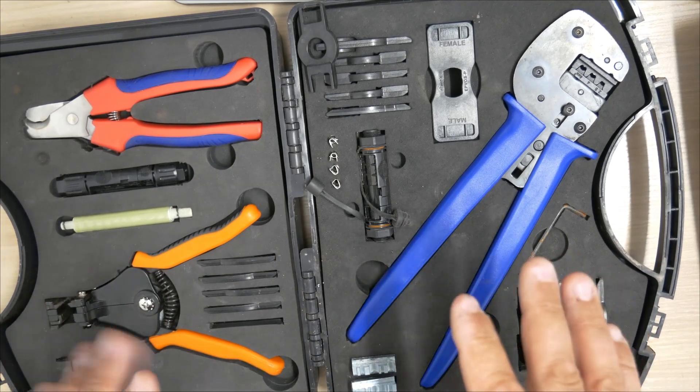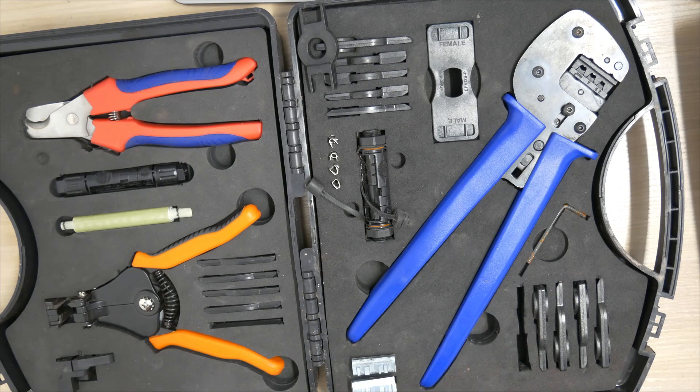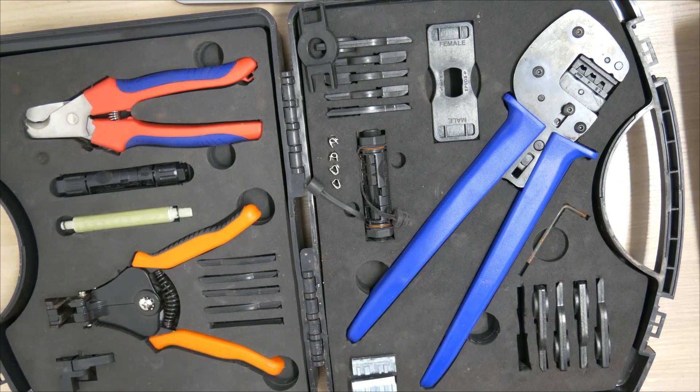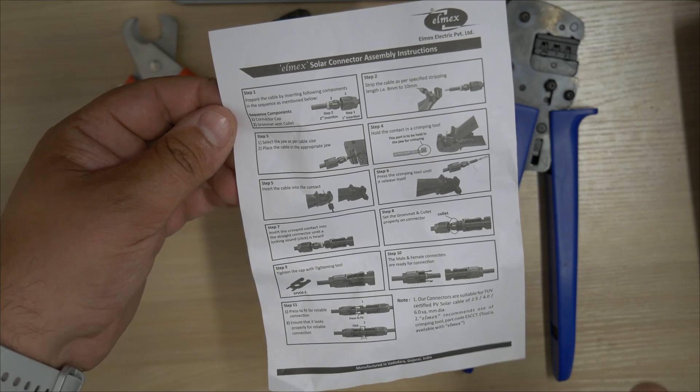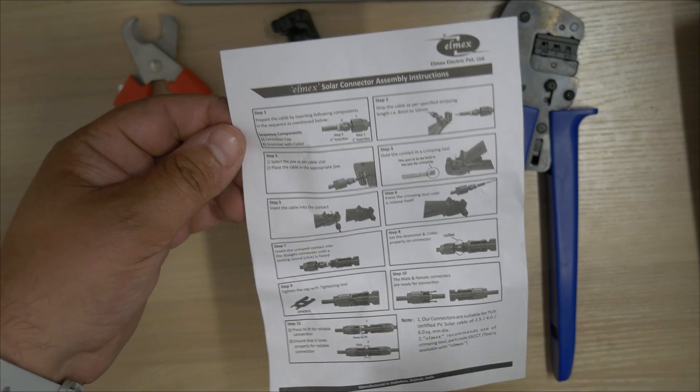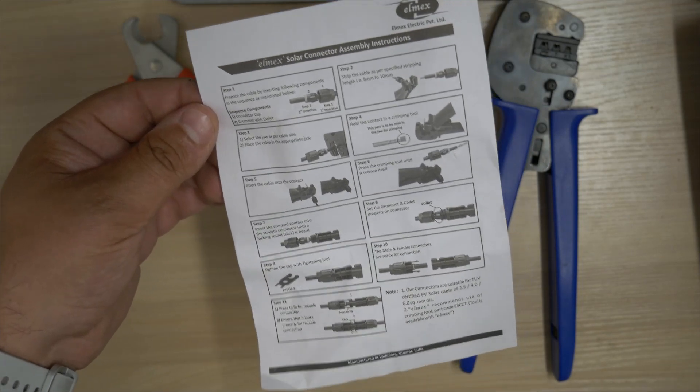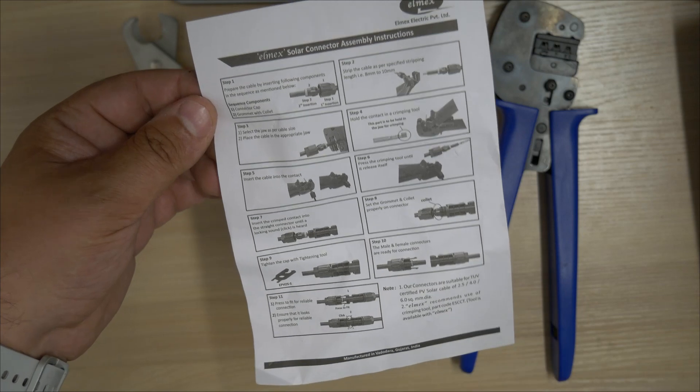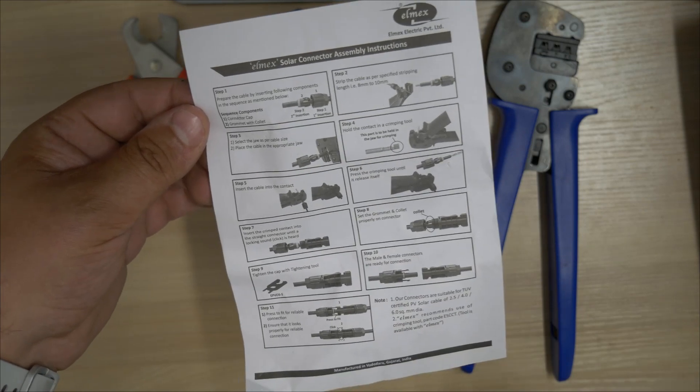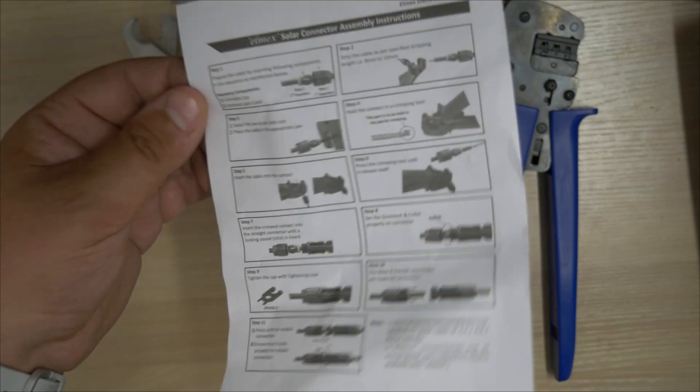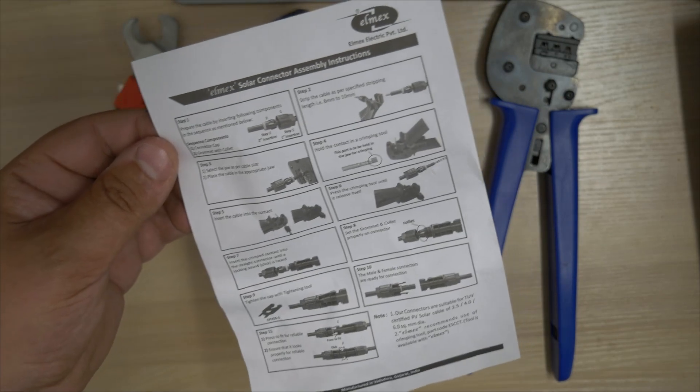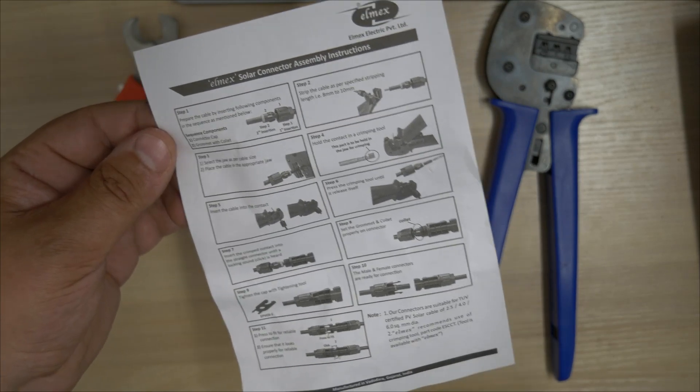But we're just going to use the basic bits to make off a couple of MC4 connectors and show them being crimped together. So in the box of these LK connectors, it actually comes with an instruction sheet for making off your MC4. For those who aren't familiar with it, it's pretty straightforward. I'm going to run through it here, but if you want a little visual guide, it comes in the box of 50.